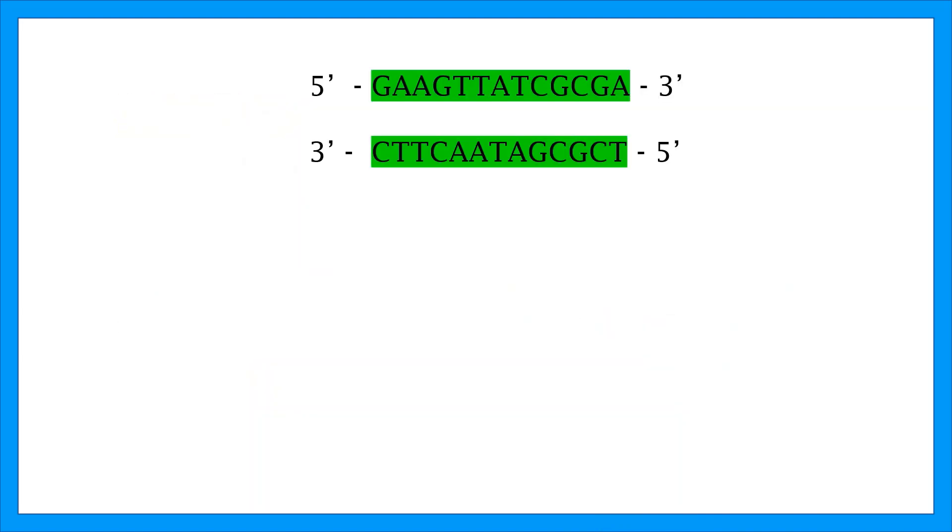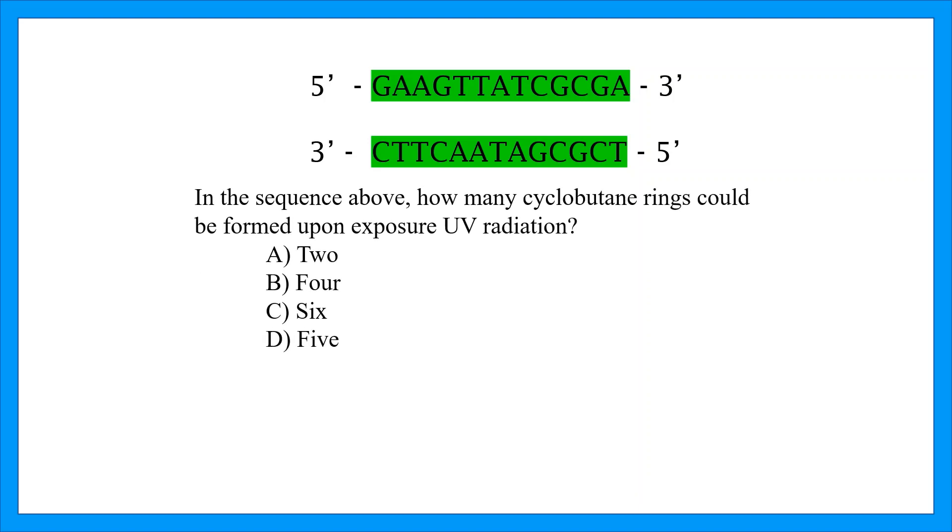Now let's take a look at the DNA sequence in question. In the sequence above, how many cyclobutane rings could be formed upon exposure to UV radiation? So we know that cyclobutane rings can occur between two adjacent thymines, a thymine and cytosine, or two cytosines. These are abbreviated as C's and T's. In the first DNA strand, we have two T's and a T-C pair. So in the first strand, we have two possible ring formations. In the three prime strand, we have a C-T pair, a T-C pair, and another C-T pair. That brings us to a total of five possible cyclobutane rings that could occur in this DNA sequence.